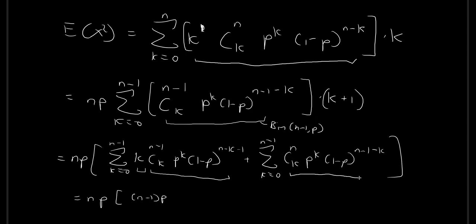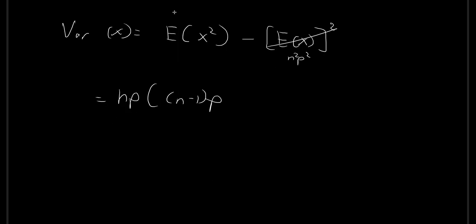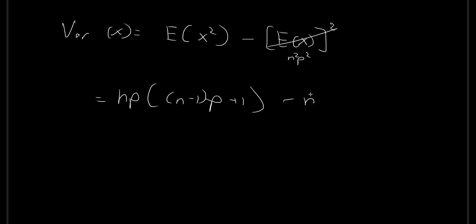So it's this term multiplied by this term. And then over here, this is just the sum of all the probabilities. And if you sum all the probabilities, you just get back 1. And so this is what we have. And so moving back over here, we know the expected value of x squared is just equal to np times n minus 1p plus 1 minus n squared p squared.